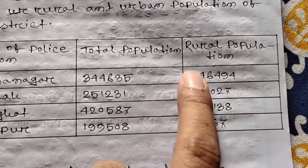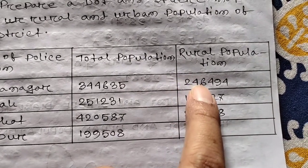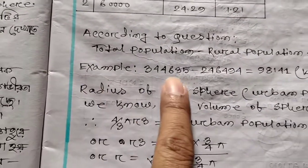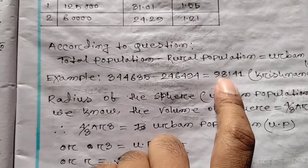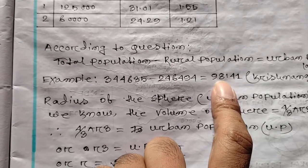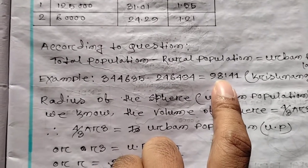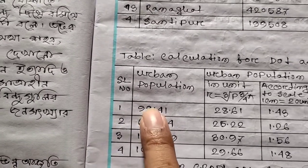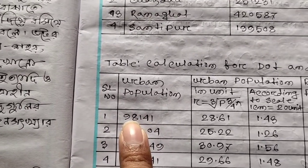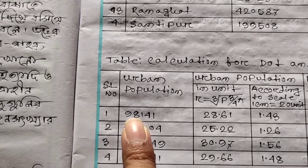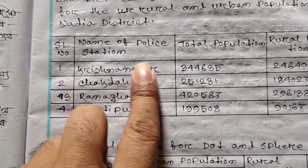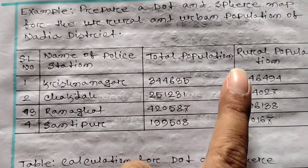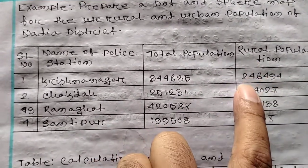And rural population is 2, 4, 6, 4, 9, 4 — that is 2,46,494. So if you look at the total population, you can see the total population and rural population, and from there the urban population.